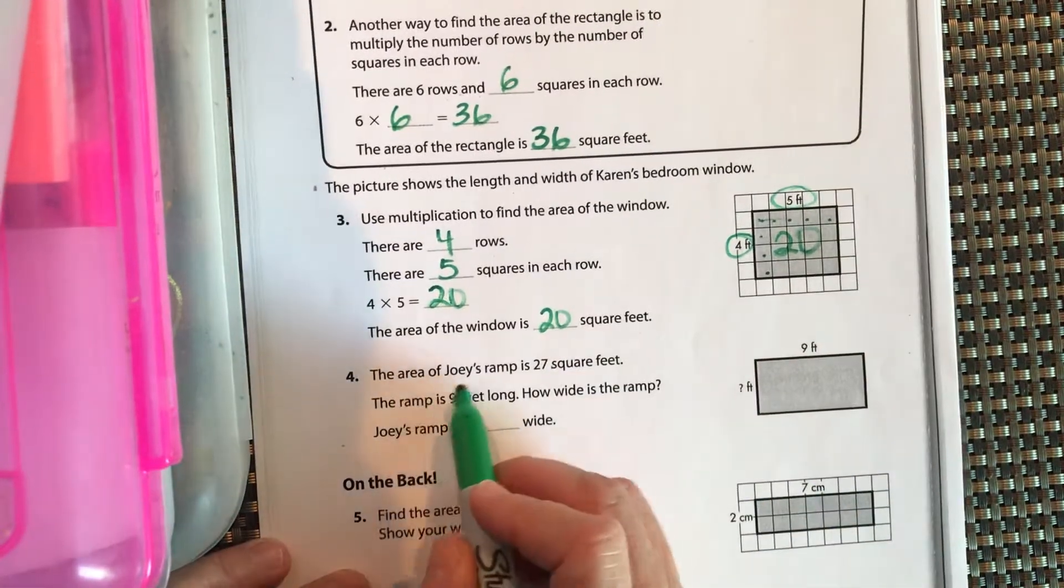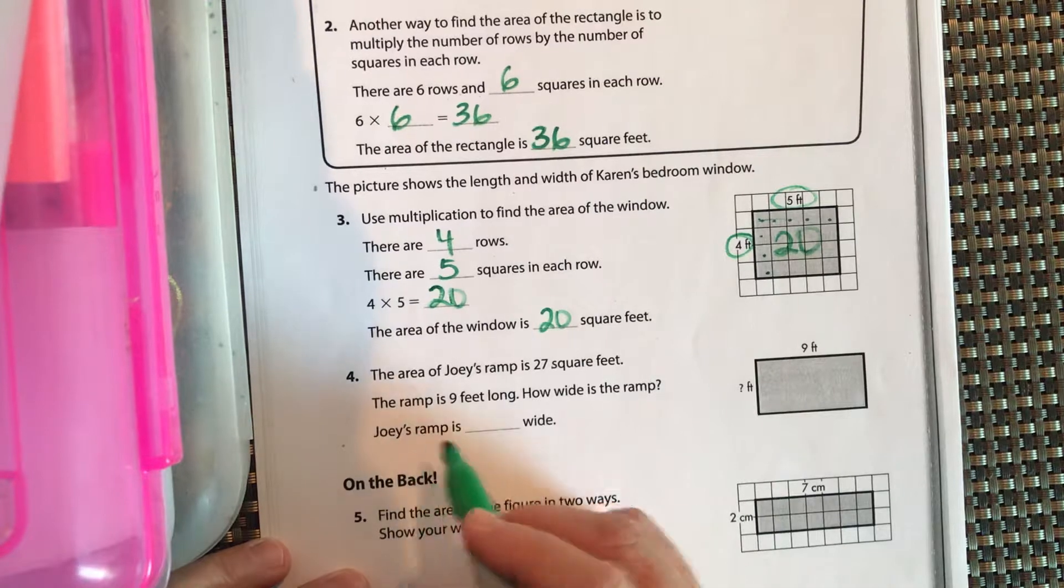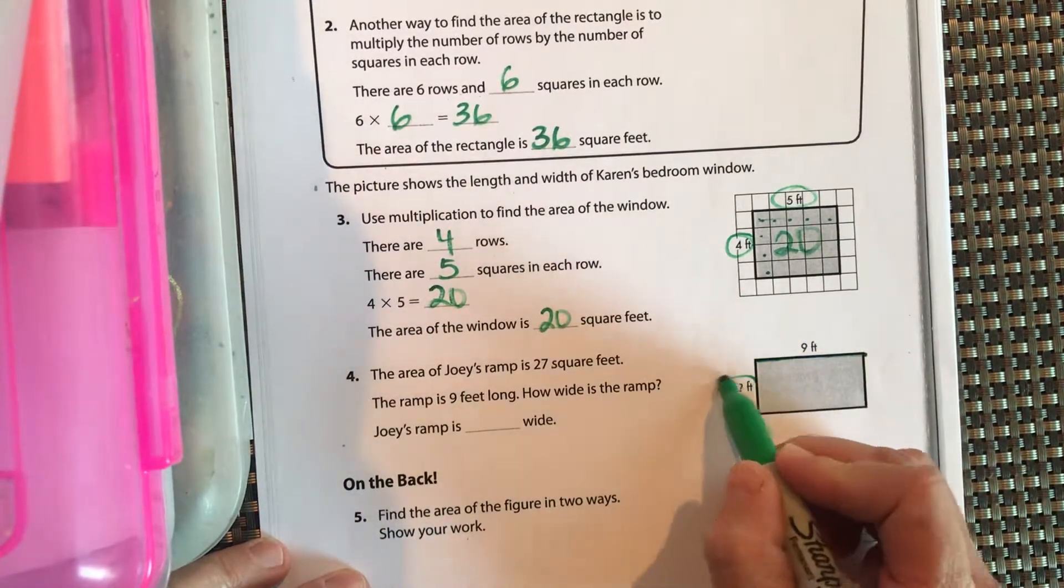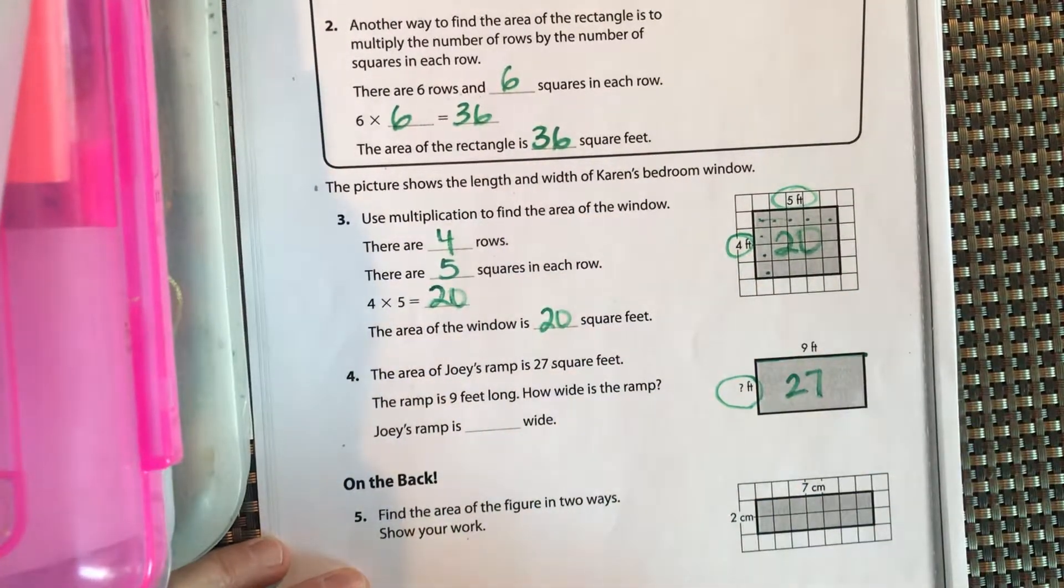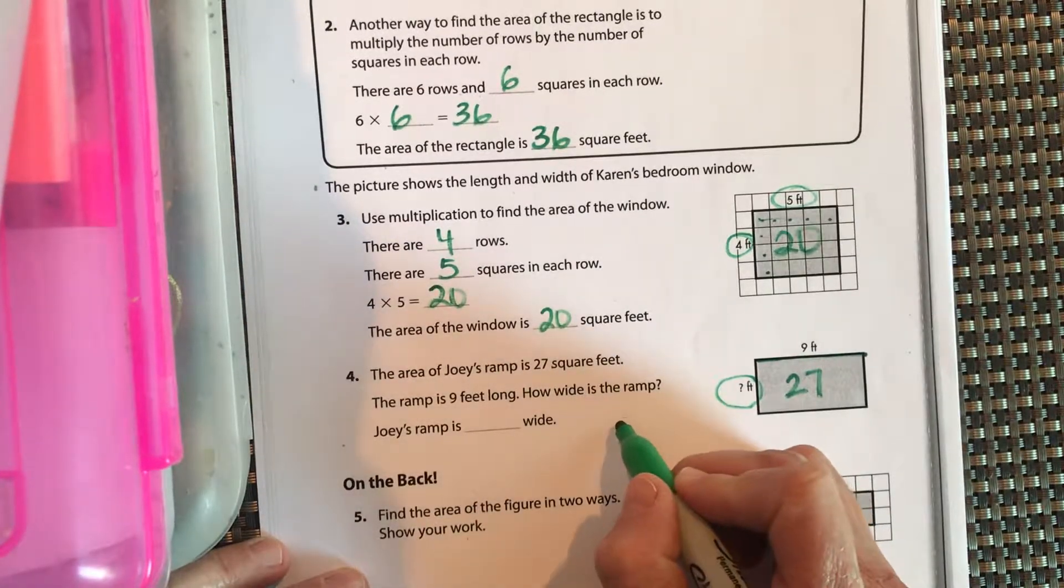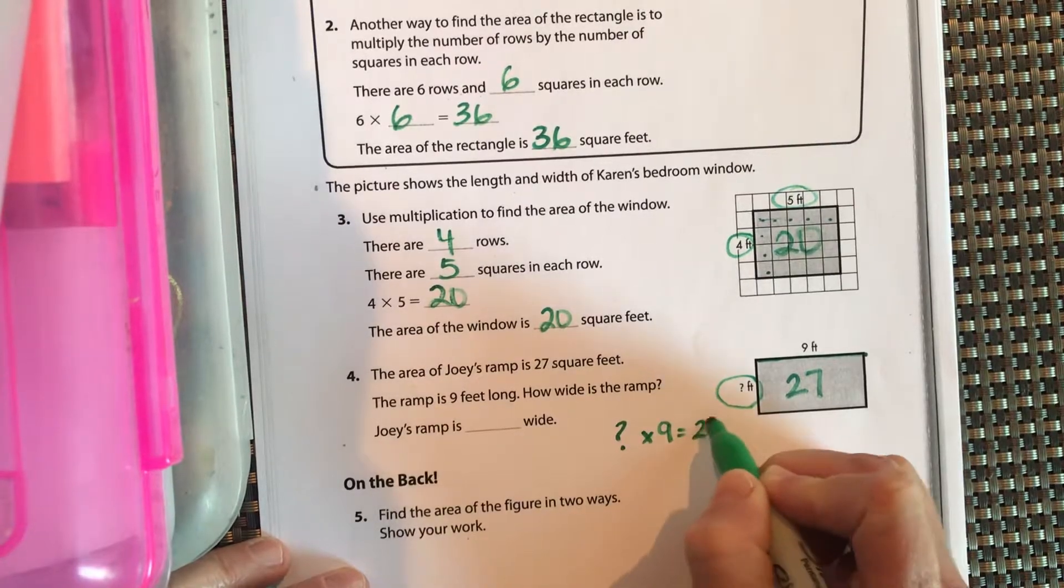Okay, the area of Joey's ramp is 27 square feet. The ramp is 9 feet long, but they're not telling us how wide it is. However, we know that the inside is 27 square feet, so it's what number times 9 is equal to 27? So go ahead and take a minute on that one, pause it.